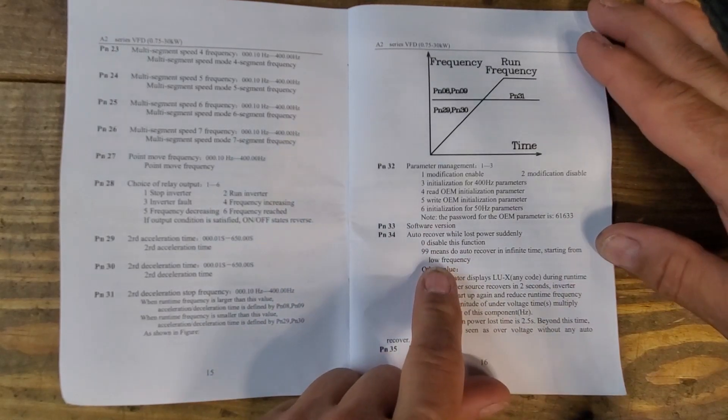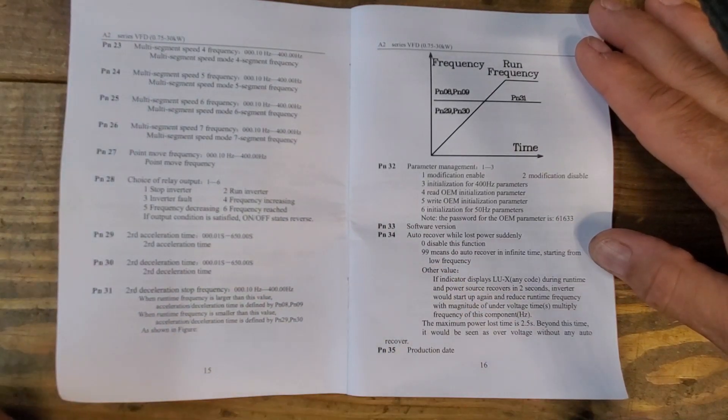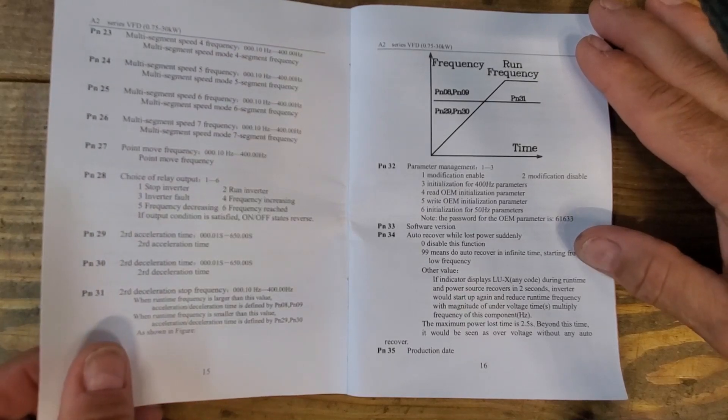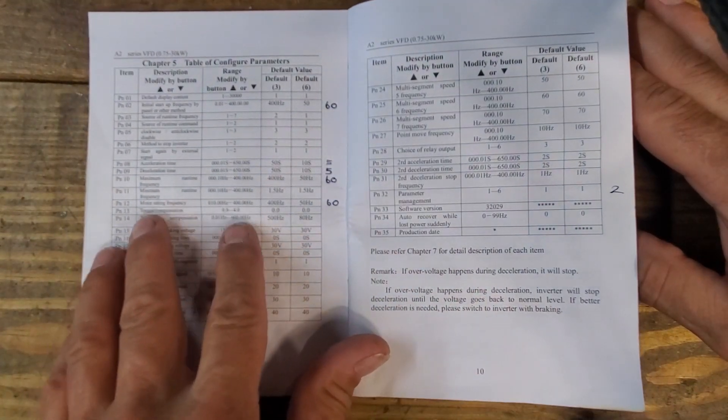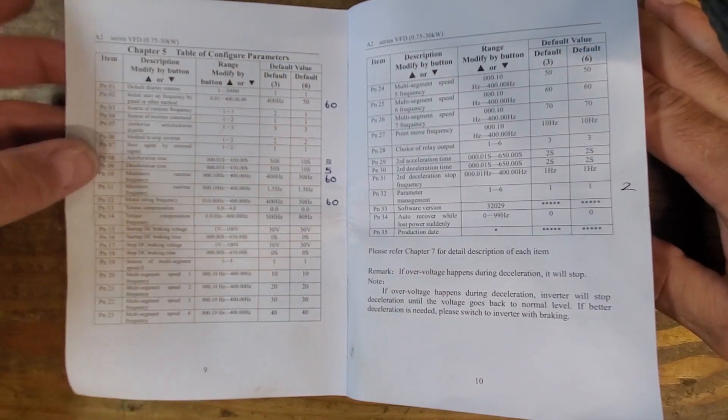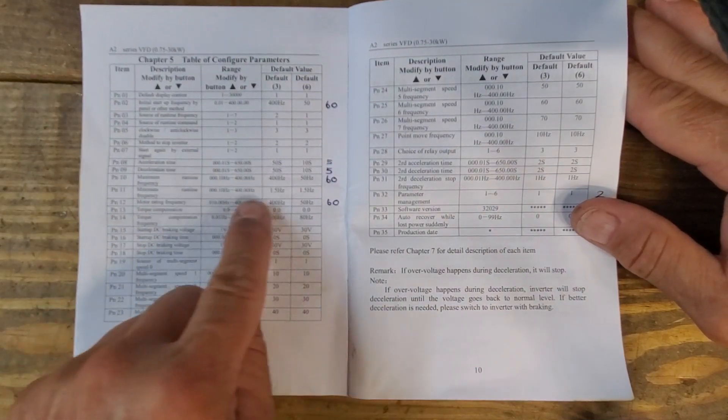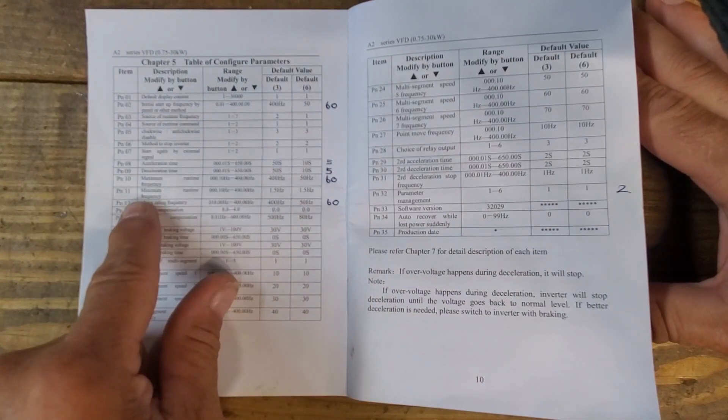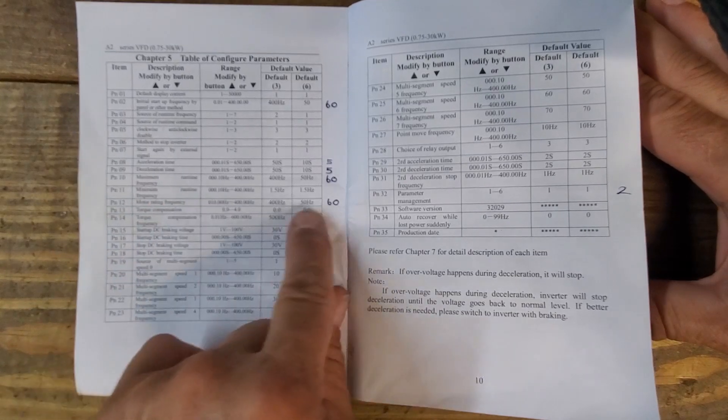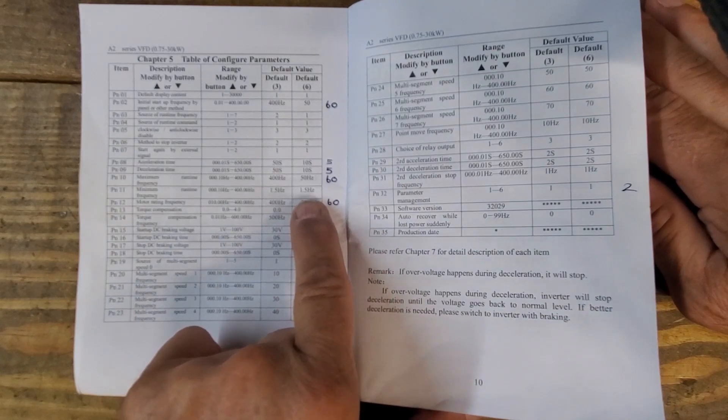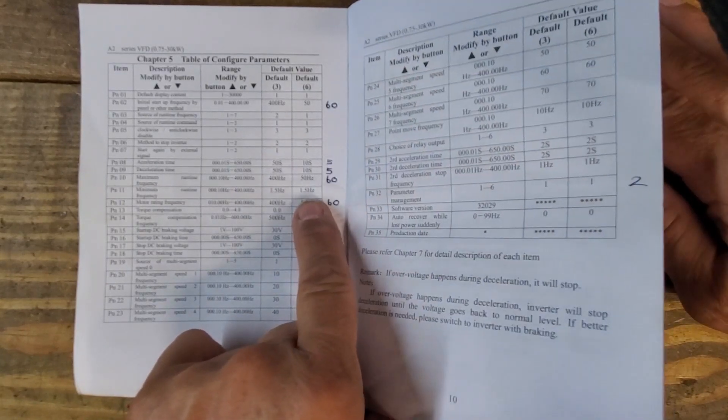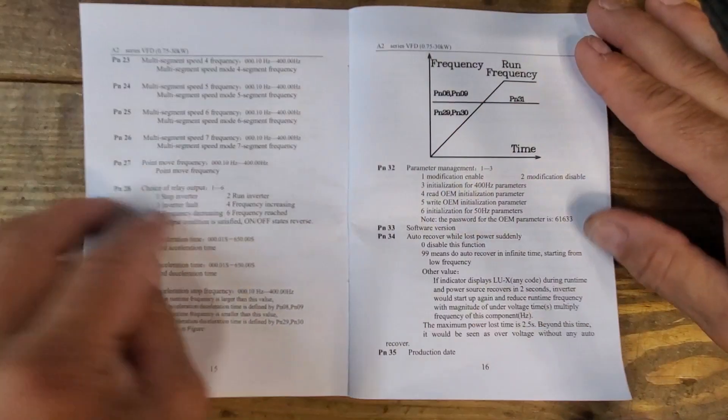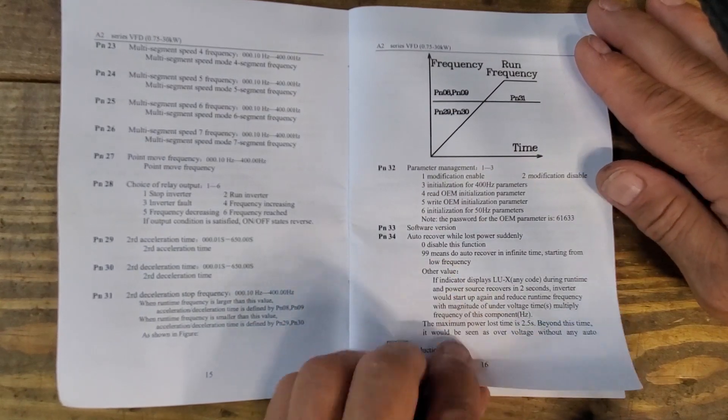It also states that if you set it to 99, the auto recover will happen with an infinite time starting from the low frequency. Mine does not do that. I've actually tried that and set it, and it didn't make any difference. It's possible that the reason it's not doing anything is that my minimum runtime frequency is set to 1.5 Hertz. So when it initializes, it may come back on at 1.5 Hertz. I need to look at that and find out if I change that to 60 Hertz, whether on power failure set to 99, it will come back on to speed.